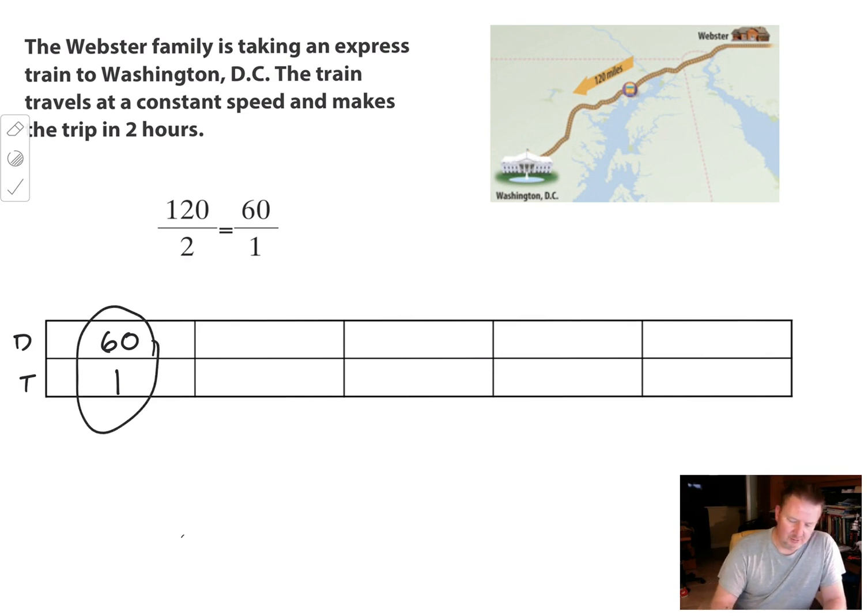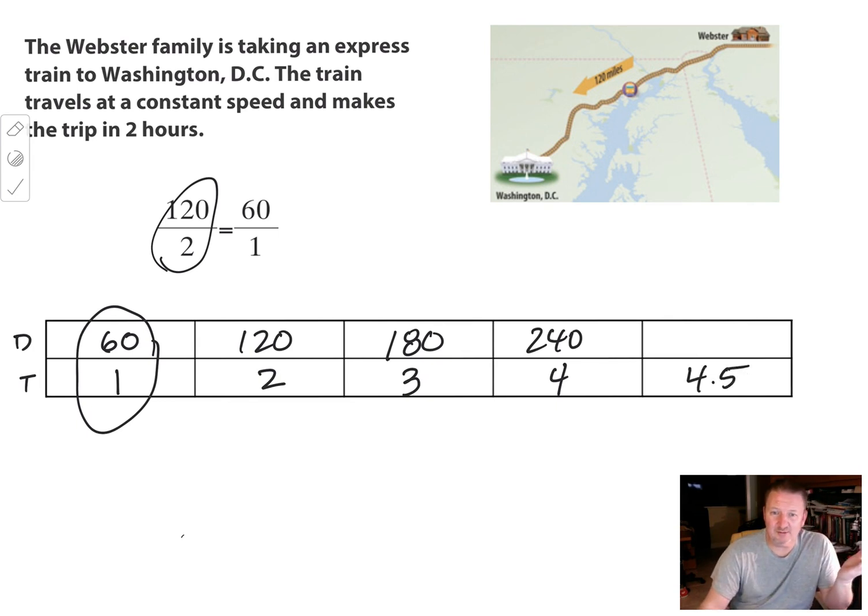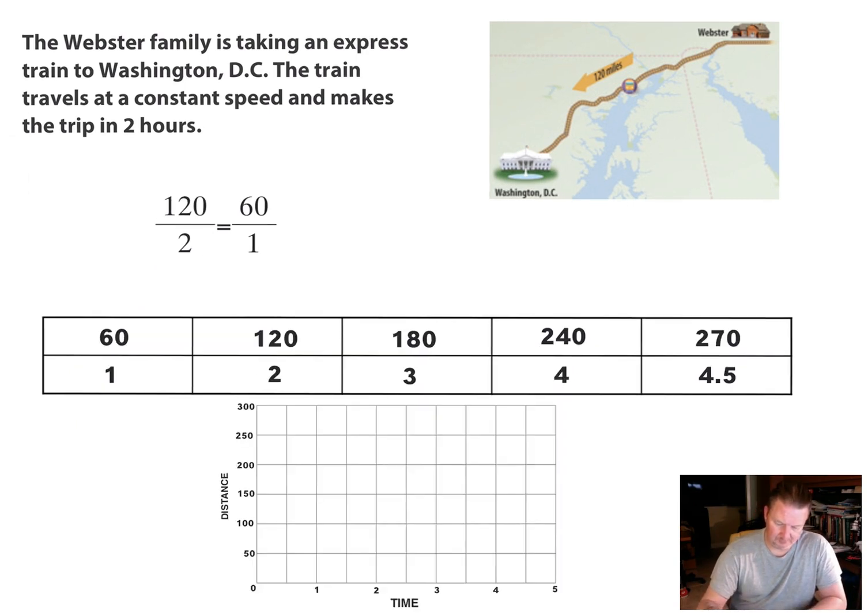All right. So say, so one times two is two, 60 times two is 120. We had that to begin with. One times three is three. 60 times three is 180. One times four is four. And then 60 times four is 240. And then I'm going to throw a little loop in here and say 4.5. Because that could be one as well. All right. They don't always have to be whole numbers. They can be decimals. All right. So one times 4.5 gives me my 4.5. 60 times 4.5 gives me 270. So that's my table all filled out. That's all I have to do.